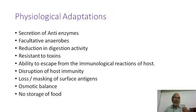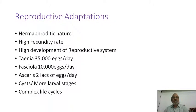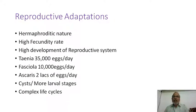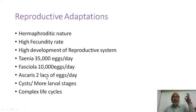Reproductive adaptations include high fecundity: most platyhelminthes are hermaphroditic, while unisexual species remain in permanently paired condition. Taenia solium releases 35,000 eggs per day, Fasciola releases 10,000 eggs per day, and Ascaris reaches 200,000 eggs per day. Parasites also have cystic stages to survive unfavorable conditions and complex life cycles.